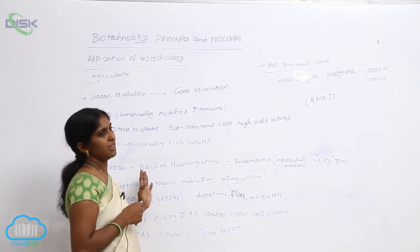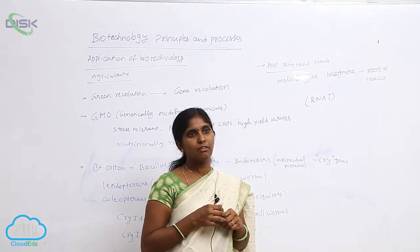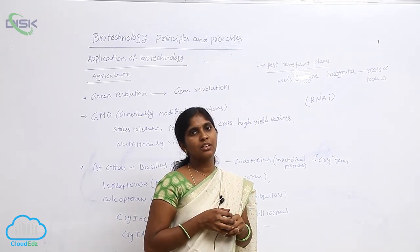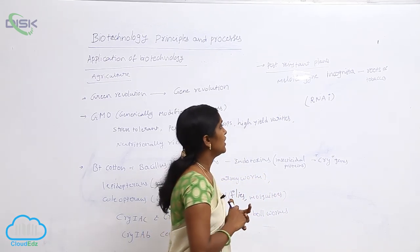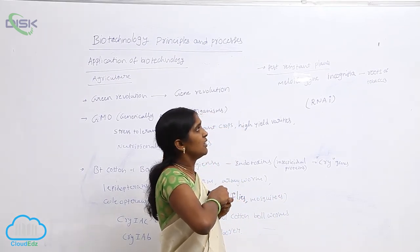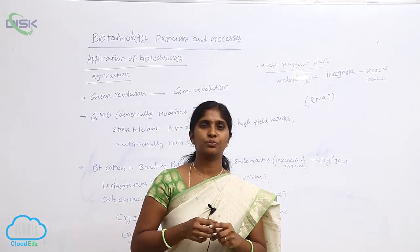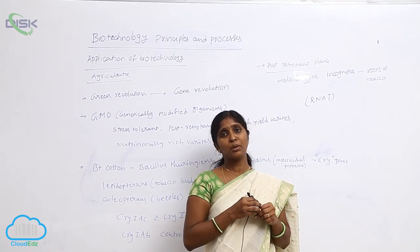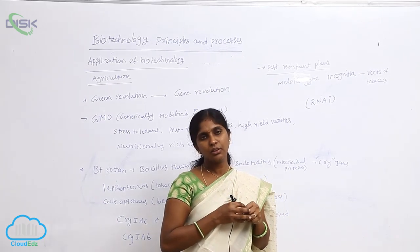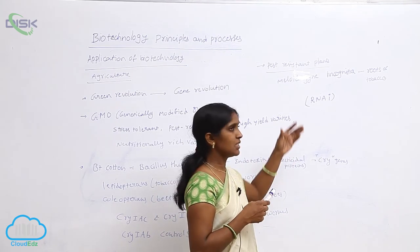Next are the insecticidal varieties — insect-resistant crops. Coming to the pest-resistant crops, pest-resistant tobacco has been developed. Nematodes also cause damage to plants. Here you can see one nematode, Meloidogyne incognita, which is present in the roots of tobacco. It resides in the root of tobacco, causes damage, and shows impact on yield — the production becomes less because of the presence of this nematode.